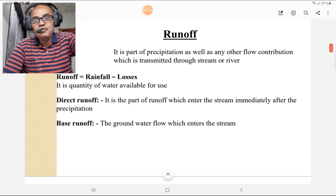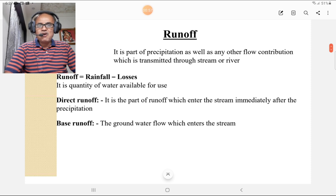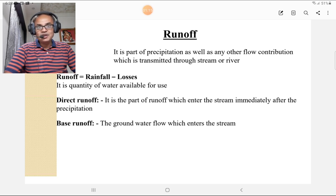First of all, we discuss the runoff. Runoff is a part of precipitation as well as other flow contribution which is transmitted through stream or a river. Runoff equals rainfall minus losses. It is the quantity of water available for use.